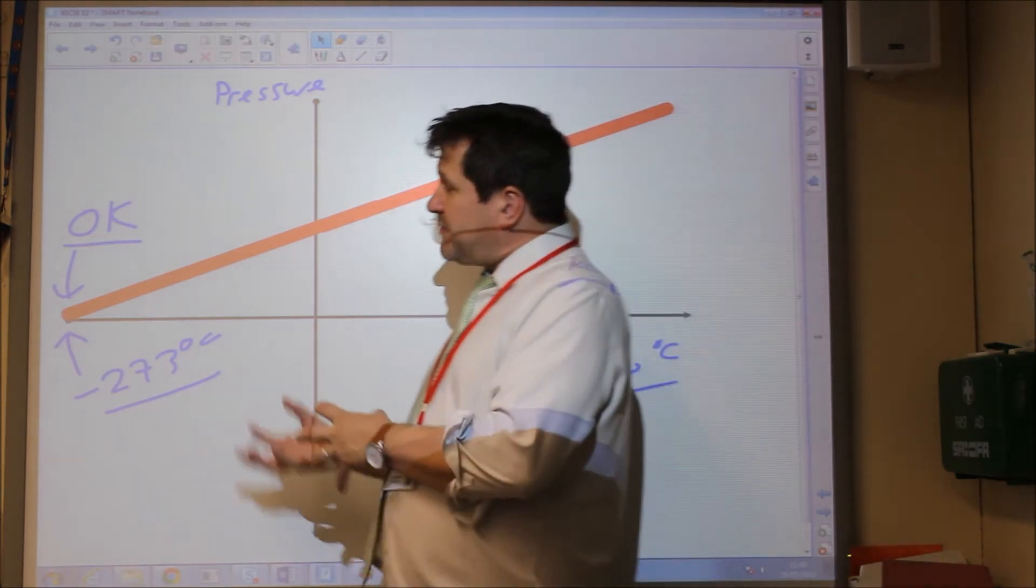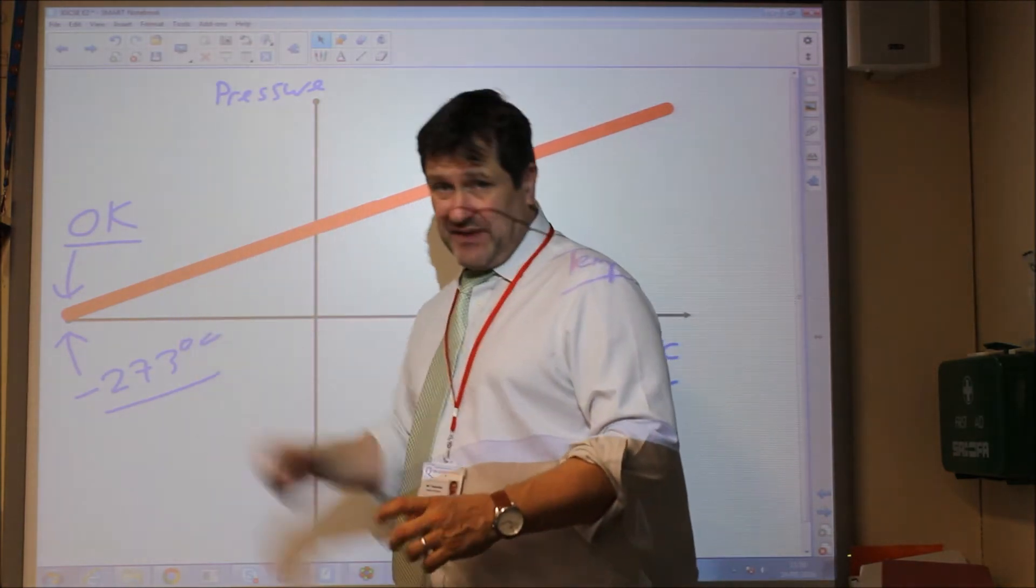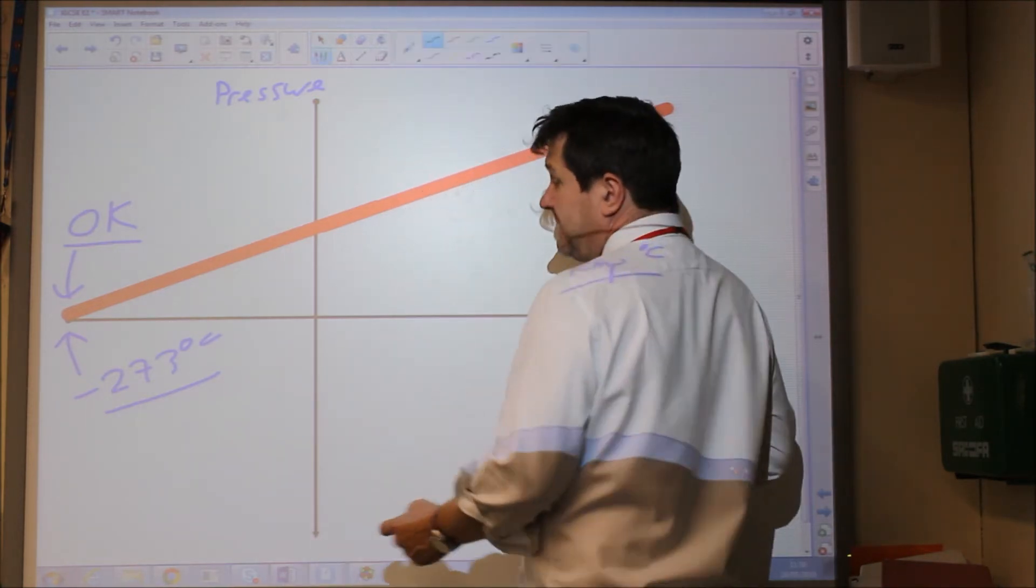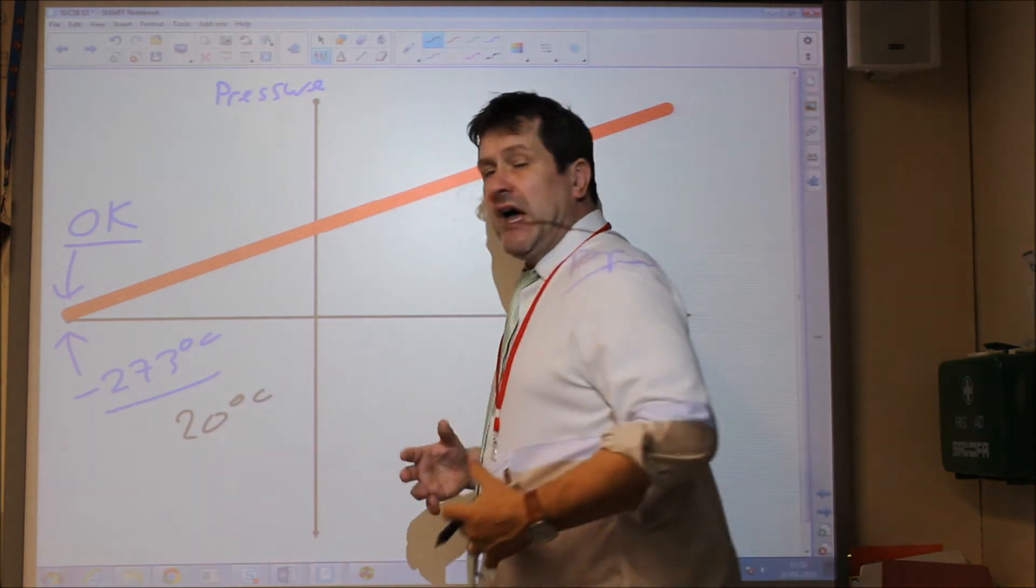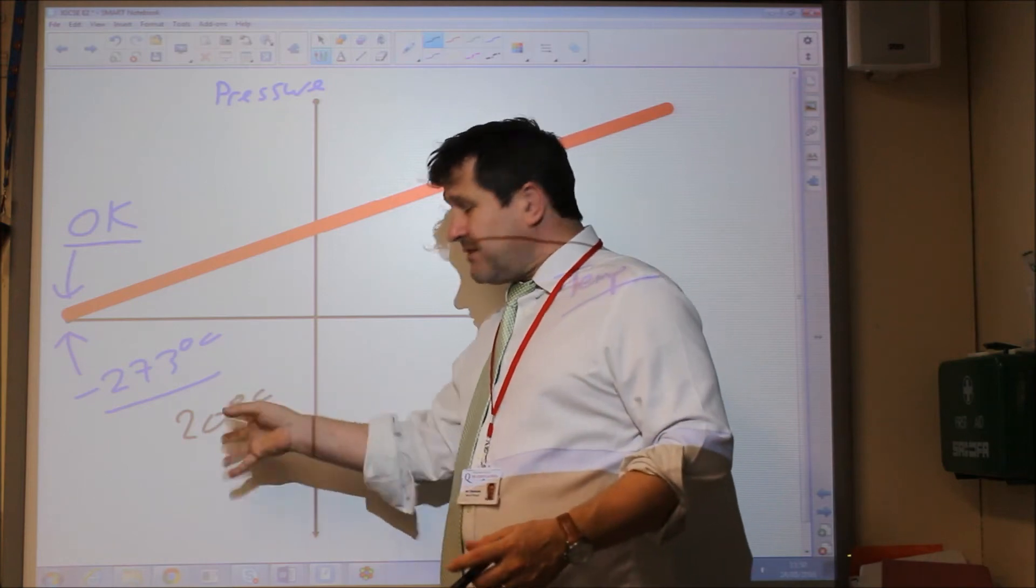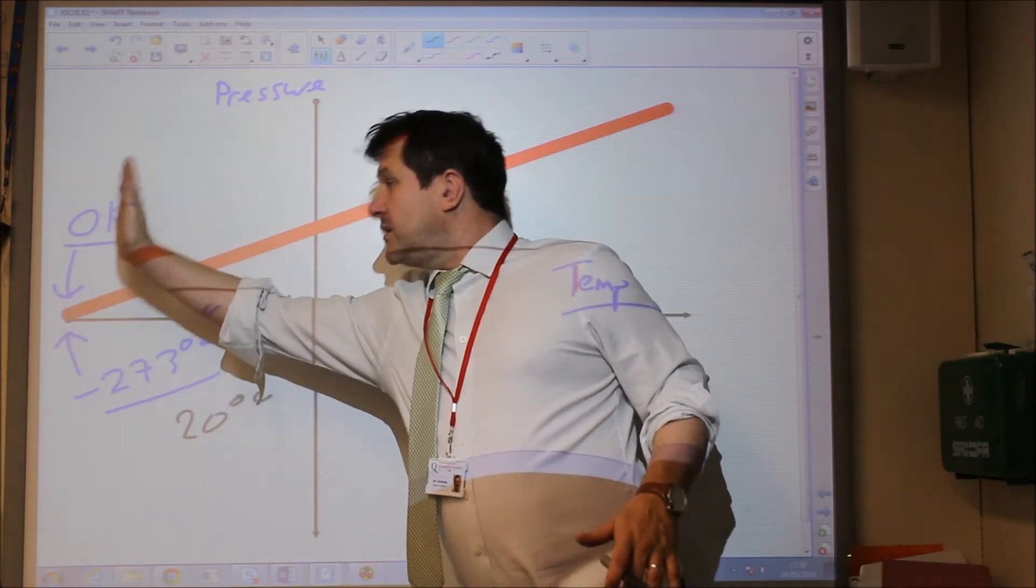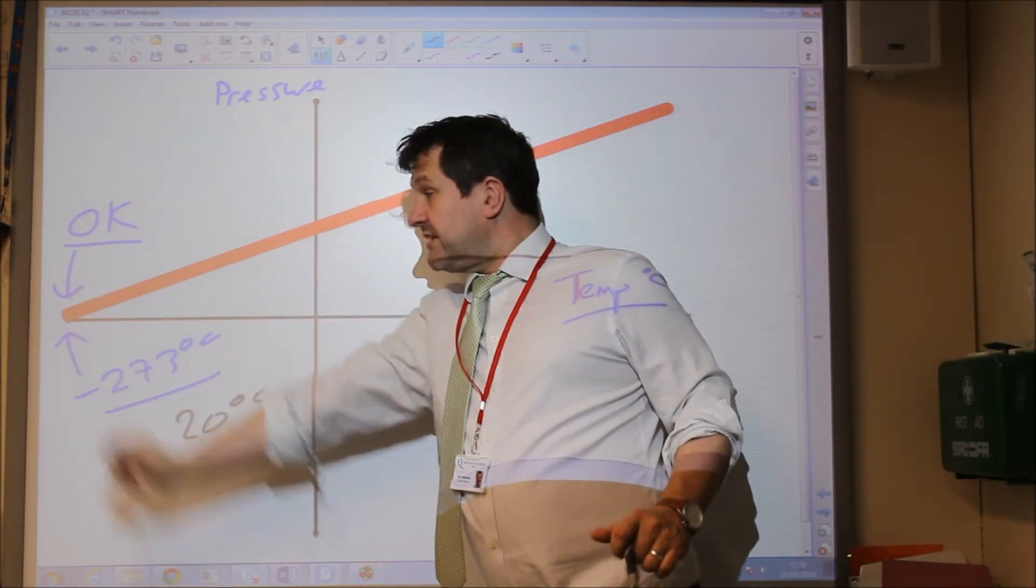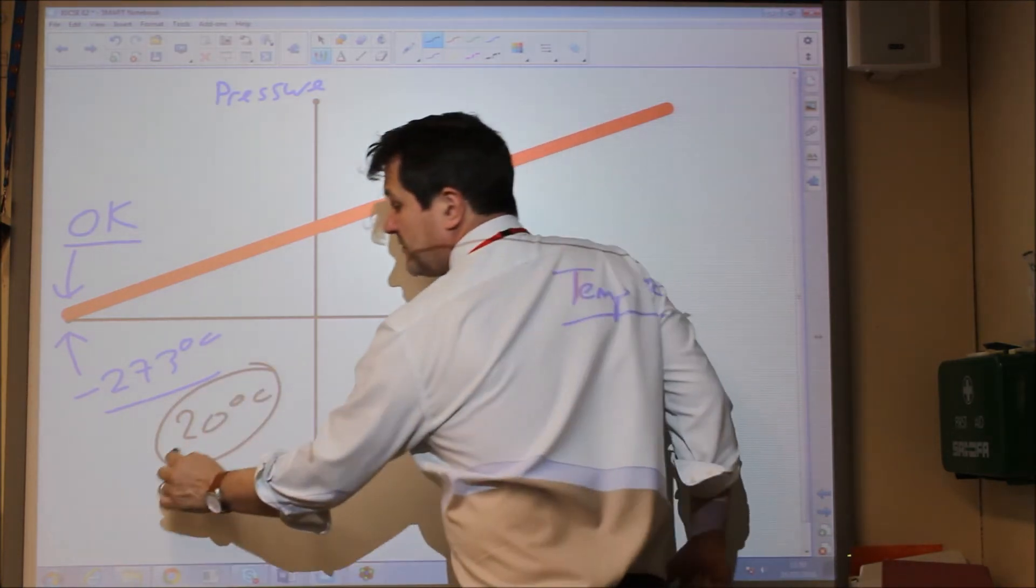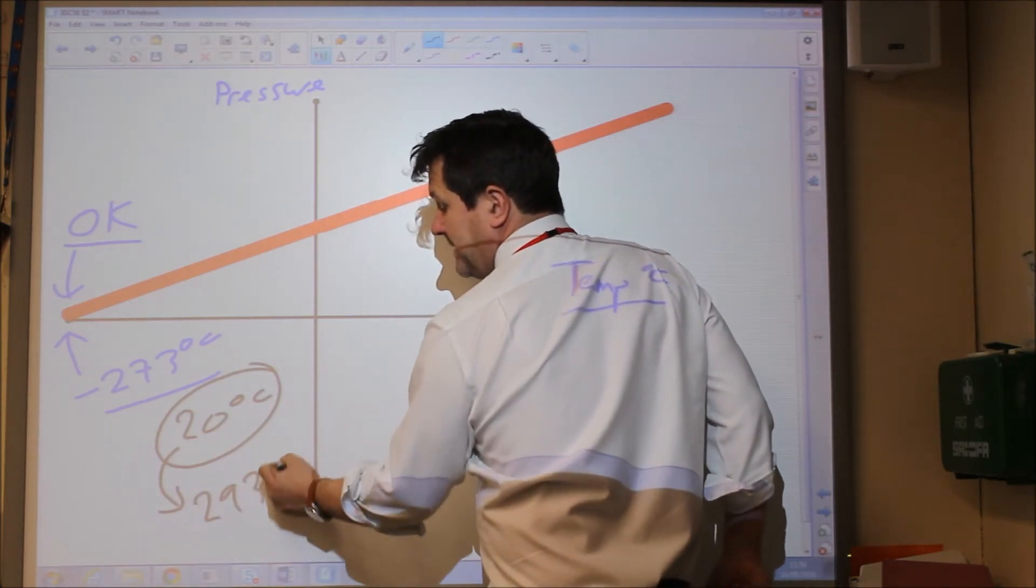It's very important that we remember this Kelvin scale because when we look at pressure law calculations we always need to make sure that temperature is in Kelvin. For example, if you were given a temperature of say 20 degrees C and you were doing a calculation, you must convert this into Kelvin. To convert 20 degrees C into Kelvin, we'd remember to add 273, so it would be 293 Kelvin.